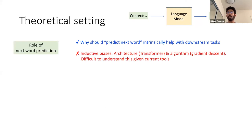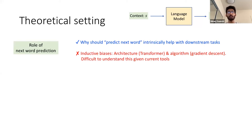I'll briefly describe the precise setting for the theoretical analysis. In this work, we are mostly interested in the role of next-word prediction — understanding why predicting the next word intrinsically helps with downstream tasks. While there are other factors like the inductive biases of the model architecture — transformers, or algorithms like gradient descent — precisely understanding the role of these inductive biases is a very difficult problem given our current tools for the theory of deep learning. So we're going to restrict our attention to the role of next-word prediction and try to distill away the other factors.